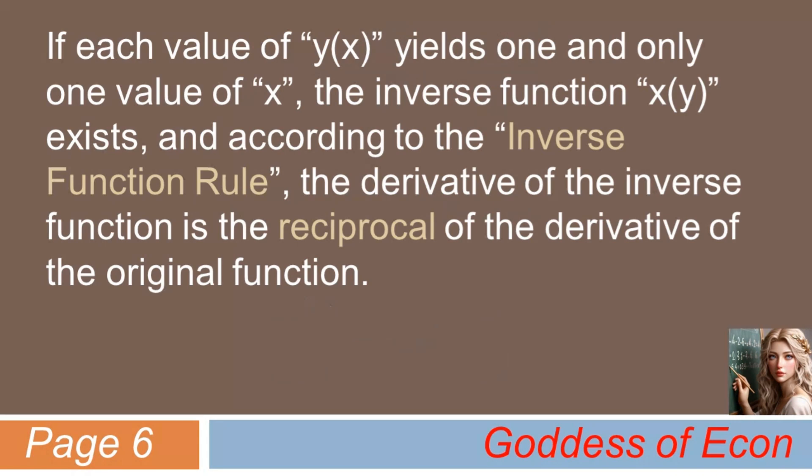Consider a function, y(x). Suppose that each value of y yields one and only one value of x. Then the inverse function, x(y) exists, and according to the inverse function rule, the derivative of the inverse function is simply the reciprocal of the derivative of the original function.